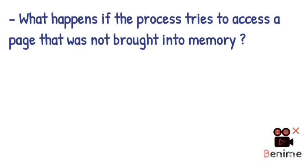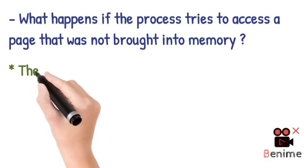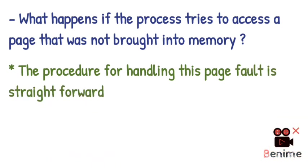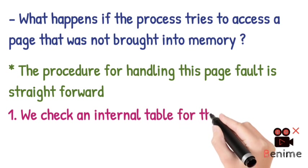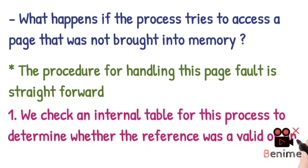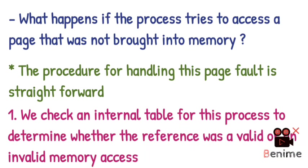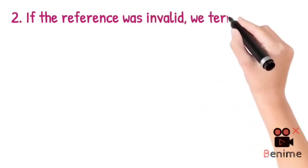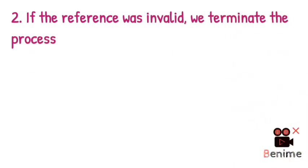Another condition arises: what happens if the process accesses a page which is not in memory? A page fault will occur. To handle this, we first check the internal table for that process to determine whether the reference is valid or invalid. If the reference is invalid, we terminate the process at that time. But if it is valid and the page is simply not currently stored in memory, we will load that page into memory.